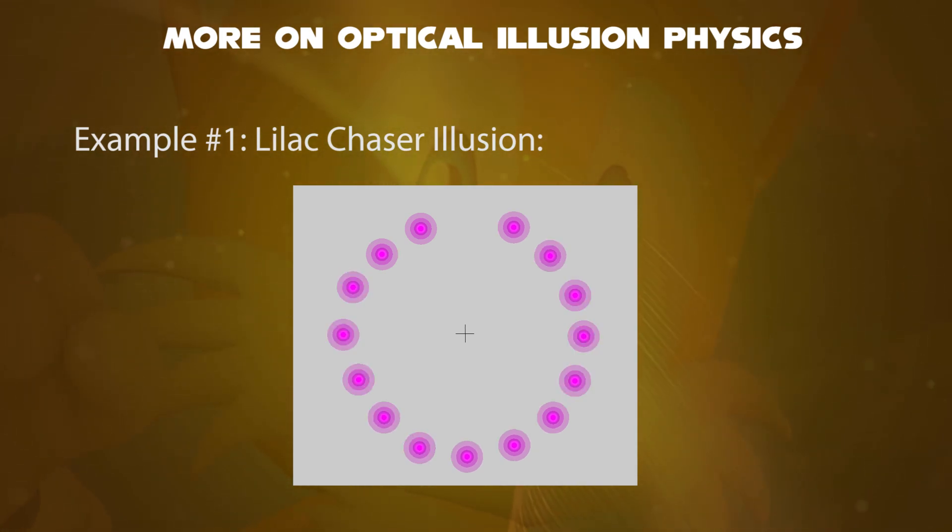All you have to do is to focus on the cross mark at the center so that magenta dots vanish slowly in the gray background, making the vanished magenta dots appear to be green in color, due to complementary color.